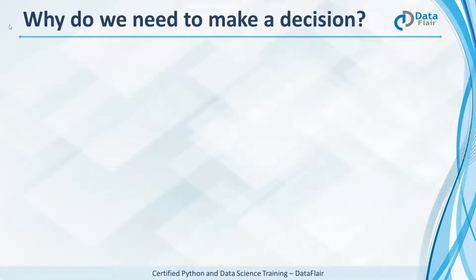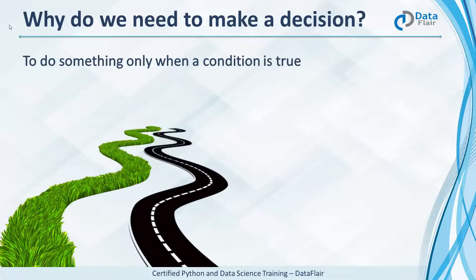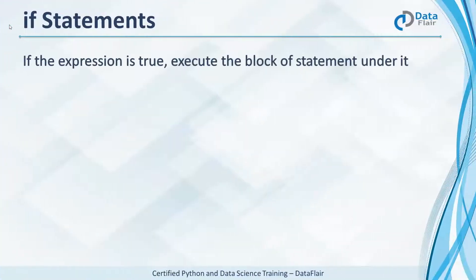When do we need to make a decision? When you wish to do something only when a condition is true. Say you want to go out grocery shopping, but you'll only do so if it isn't raining. To make this happen, we use if-statements. It takes an expression or a condition and checks whether it is true. If it is, it executes the block of statements under it.